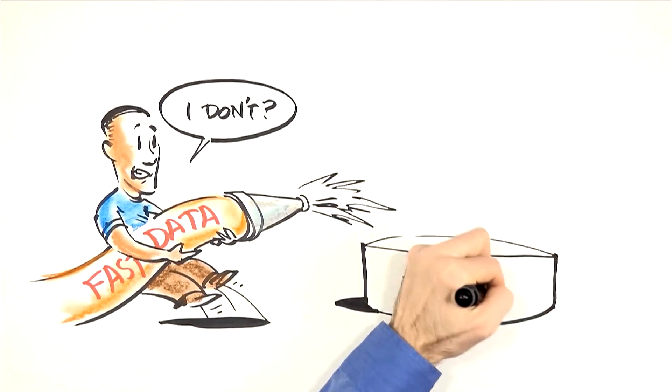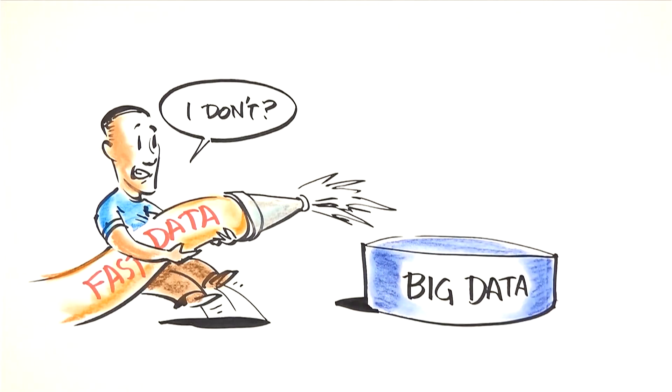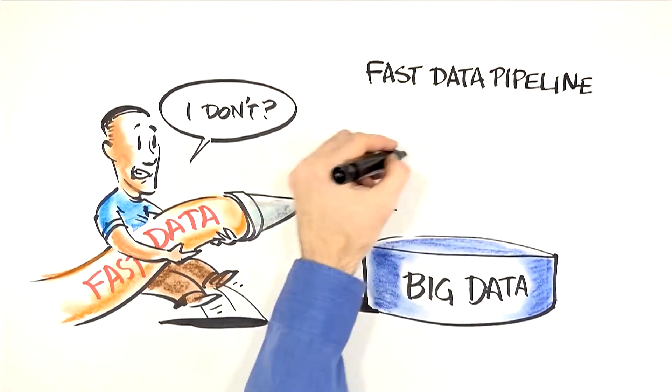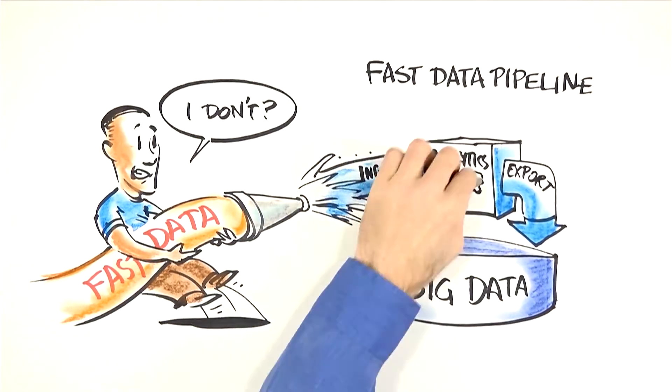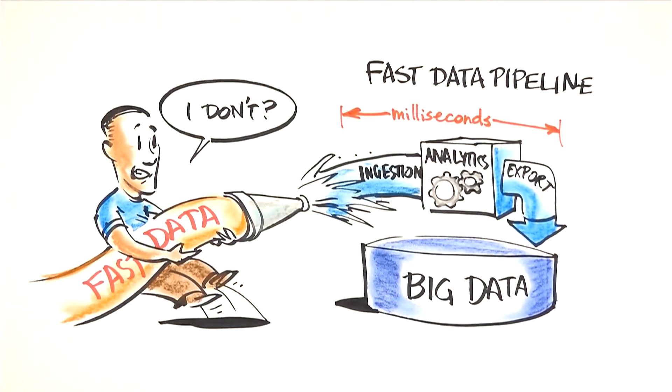It provides information about the process that generated it. Fast data flows like a fire hose from sensors, click streams, machine data, and data from devices, events, transactions, and customer interactions.